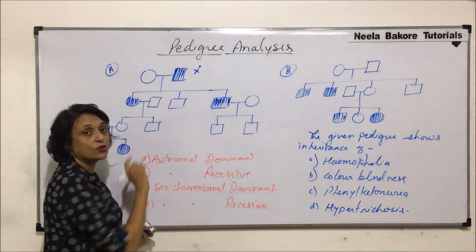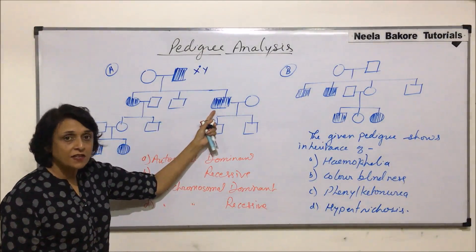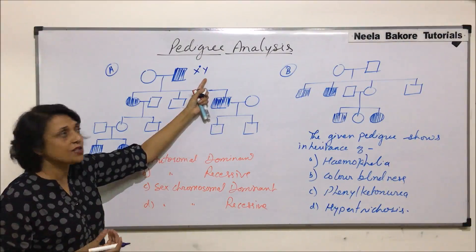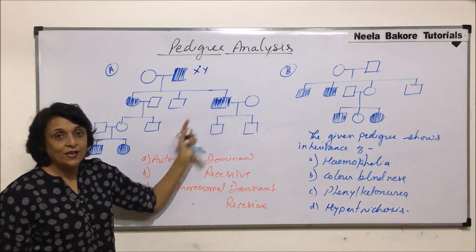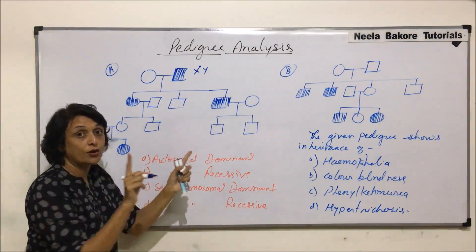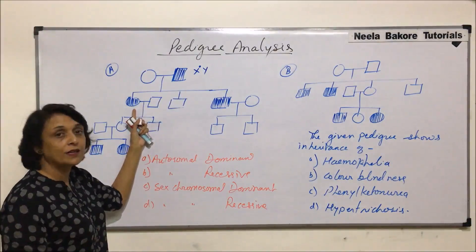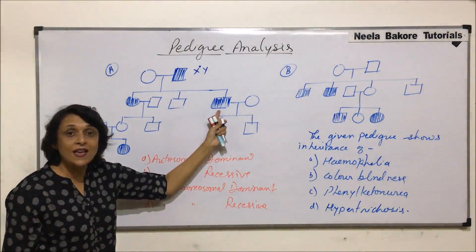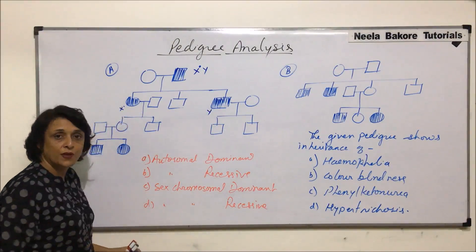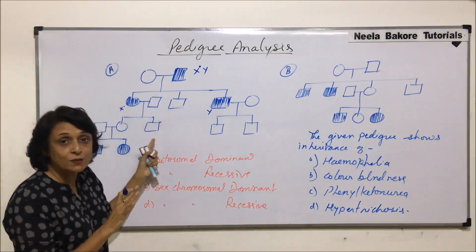The son receives the Y chromosome from the father, not the X. If the son is showing a disease for which Y carries no gene, it cannot be sex-linked. So the second clue is: if the gene is with the father and it passes to both sons and daughters, it cannot be sex-linked, because the father gives X to daughters and Y to sons.